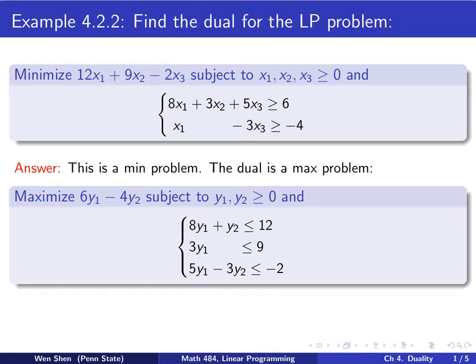We see that this problem is in min form, so it's a min problem. We can simply use the reverse of the definition, because we know the dual of a dual is the problem itself. So the dual of a min problem is the corresponding max problem. We'll have two variables, and the objective function is this column dot product with y, so 6y1 - 4y2.